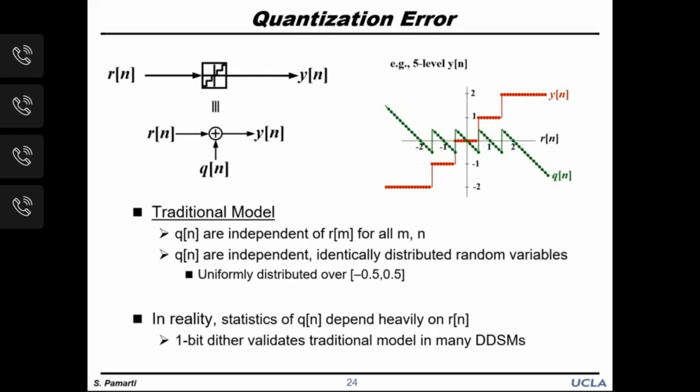So why do we use the traditional model? For one thing, it makes the math significantly easier — we can predict the power spectral density and variance of q[n] and get a useful model for the DDSM. More importantly, we can actually make the traditional model true by using 1-bit LSB dither. It turns out that in many cases, 1-bit LSB dither makes the traditional model of quantizer error valid by building up randomness in the integrators to break up any limit cycles. We'll discuss this further shortly.